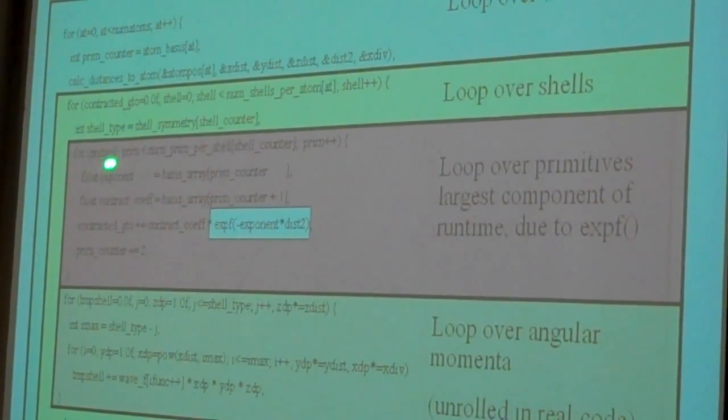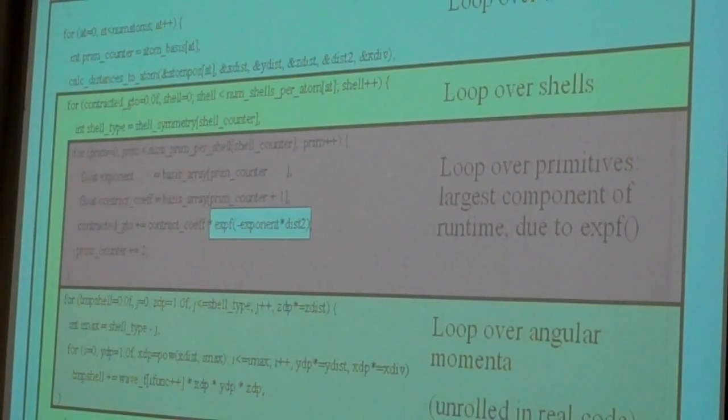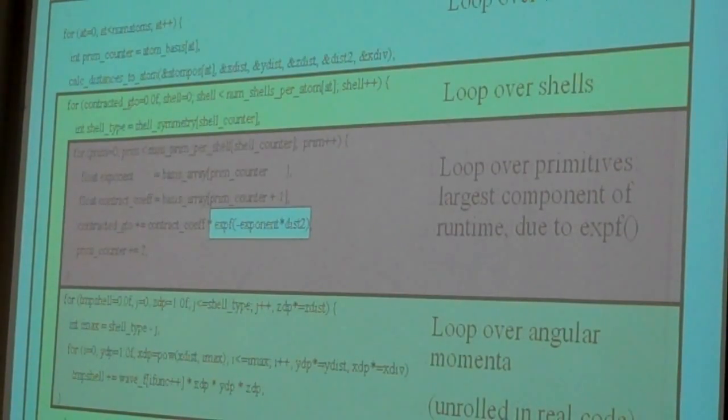And one of the things that's worth noting is in a lot of cases the number of different atom species and the number of coefficient arrays and things that have to be walked. Although it's greater than 1, it's usually a small number. Maybe it's only 6 or 7 or 8 or maybe 12. That in the grand scheme of things is a very short loop.